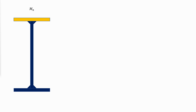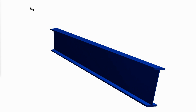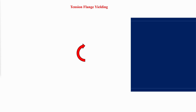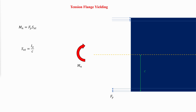The nominal flexural strength of a plate girder is based on one of the limit states of tension flange yielding, compression flange yielding, local buckling, or lateral torsional buckling. When a girder is bent about its strong axis with a positive bending moment, the top flange will be in compression and the bottom flange will be in tension. If the bending moment is large enough, the bottom flange will yield in tension. AISC F5 gives the nominal flexural strength based on tension flange yielding as the yield strength of the tension flange multiplied by the elastic section modulus referred to the tension side. The elastic section modulus is found by dividing the moment of inertia about the strong axis by the distance from the neutral axis to the outer face of the tension flange.